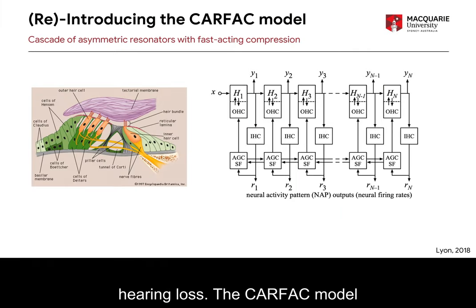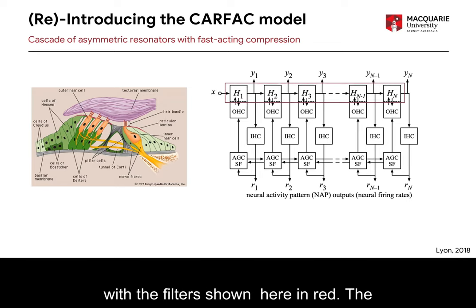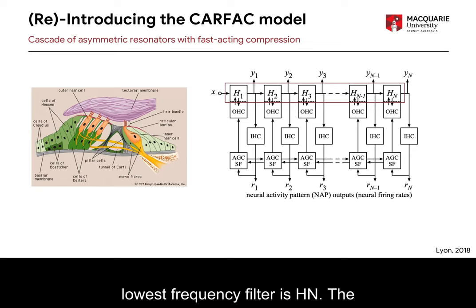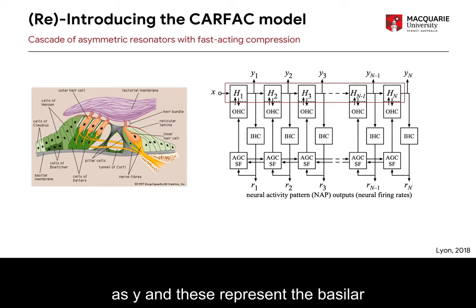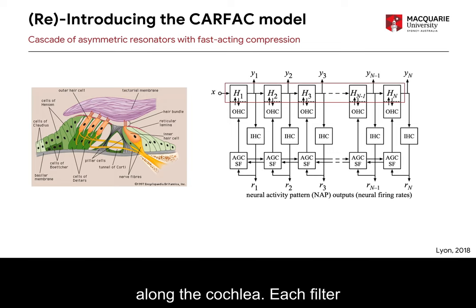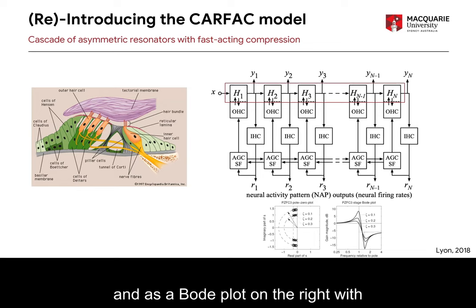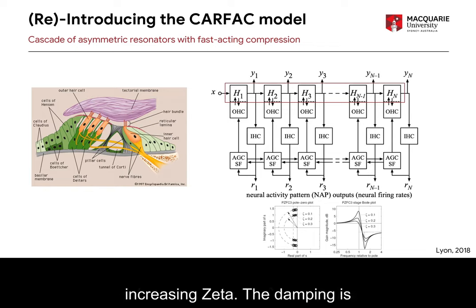The CARFAC model is a cascaded filter model of the cochlea, with the filters shown here in red. The highest frequency filter is H1, which also receives the input X, and the lowest frequency filter is Hn. The output of each of the filters, shown as Y, represents the basilar membrane motion at that particular point along the cochlea. Each filter acts as an asymmetric resonator, shown in the S-plane on the left and as a Bode plot on the right, with different degrees of damping with increasing zeta.